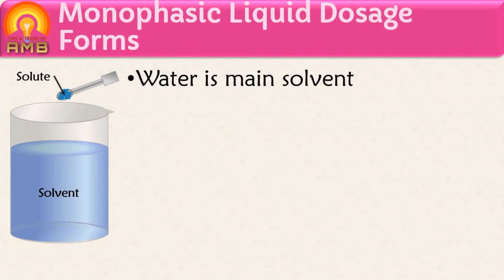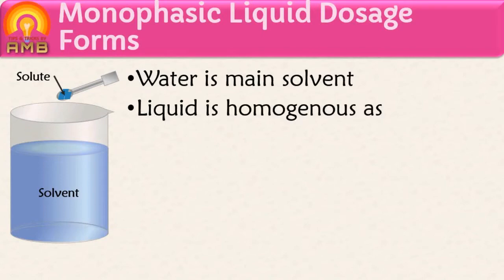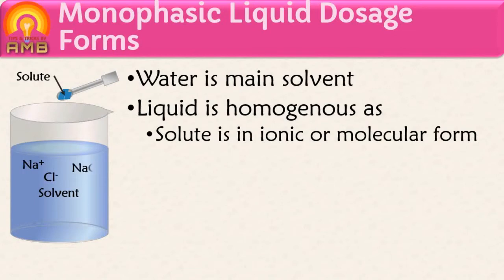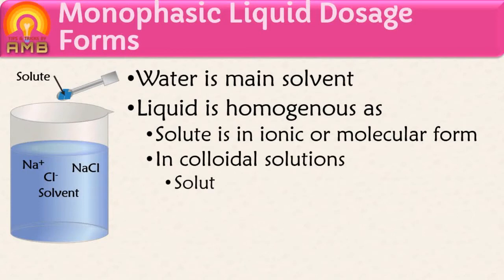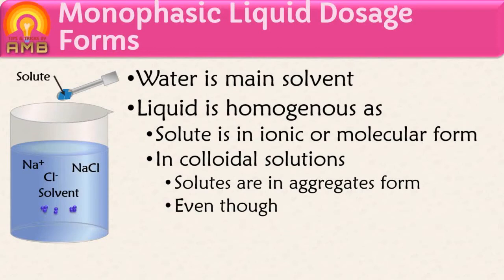Water is mainly used as solvent for the majority of monophasic liquid dosage forms. A true solution is homogeneous — that is, uniform, clear, or transparent — because in true solutions solute is in ionic or molecular form. In case of colloidal solutions, even though solutes are in aggregate form, they appear clear as these aggregates cannot be visible to the naked eye.